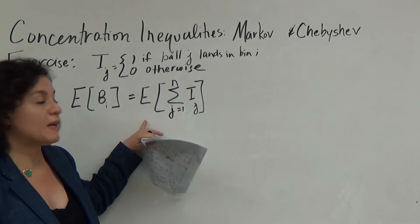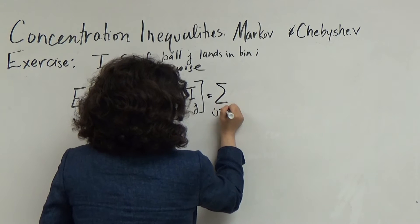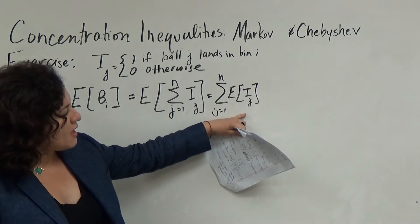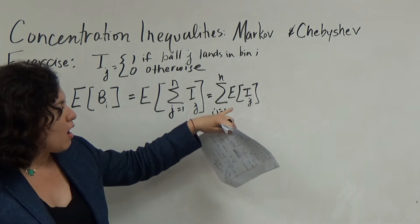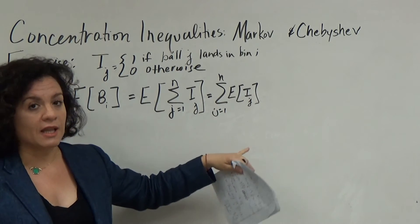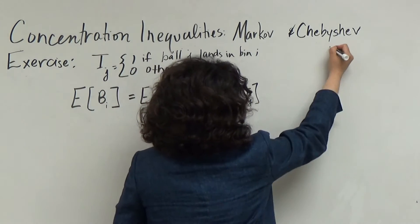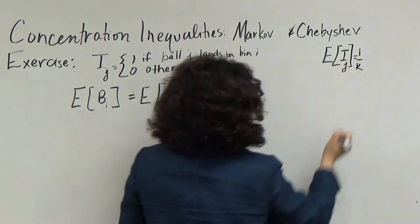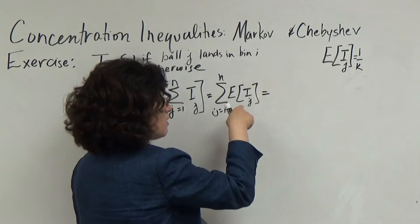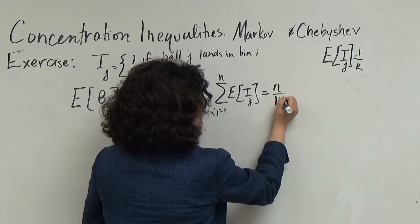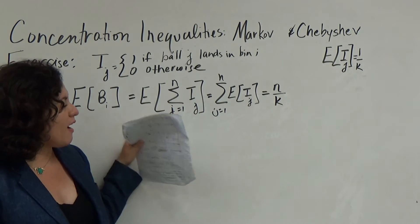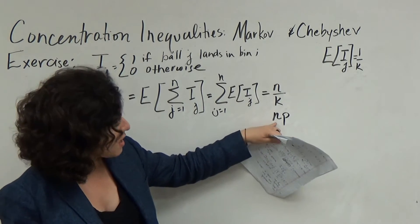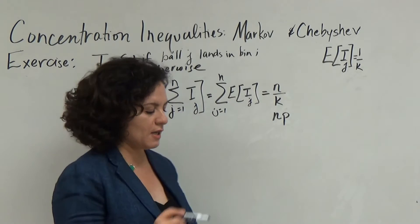Applying linearity of expectation, we get the summation from j=1 to n of E[I_j]. The expectation of an indicator is the probability of the event — here, the probability that a ball lands in the bin, which equals 1/k. Since this is the same for all indicators, E[bi] = n/k. This is just n times p, the expected number of successes in n Bernoulli trials.